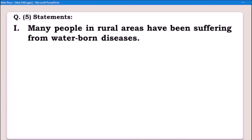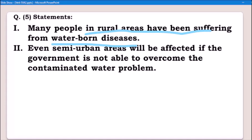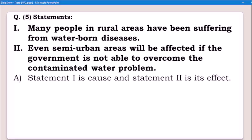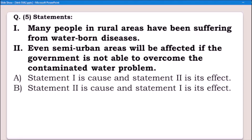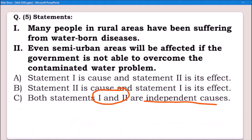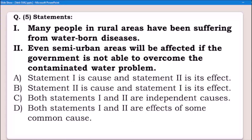Next question. Statement one: Many people in rural areas have been suffering from waterborne diseases. Statement two: Even semi-urban areas will be affected if the government is not able to overcome the contaminated water problem. Options: Alpha — statement one is cause and statement two is its effect. Beta — statement two is cause and statement one is its effect. Charlie — both statements are independent causes. Delta — both statements are effects of some common cause.